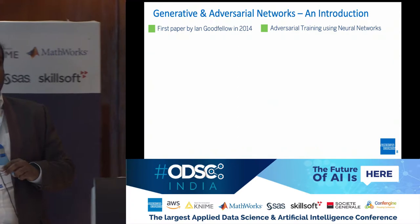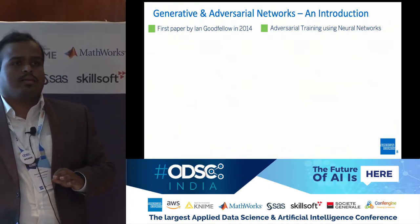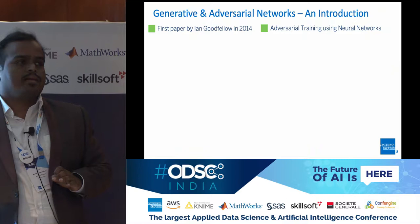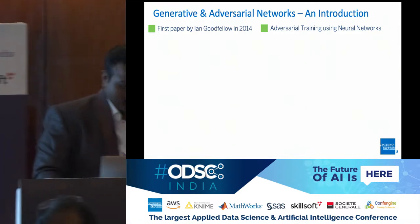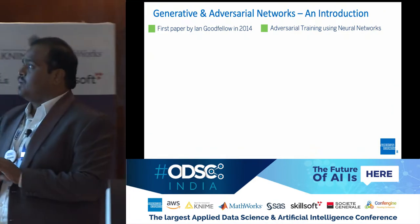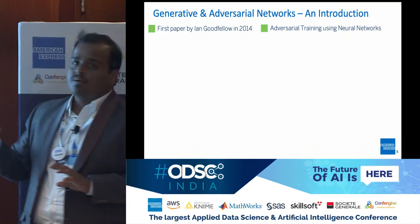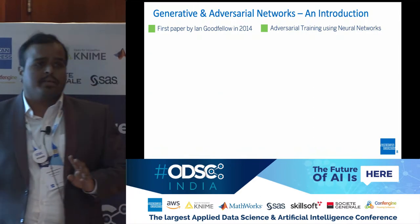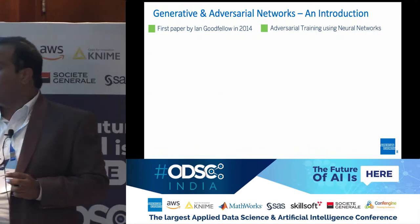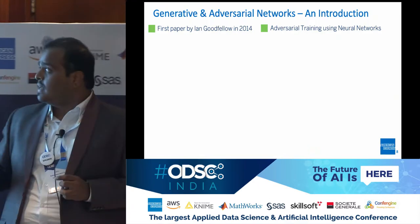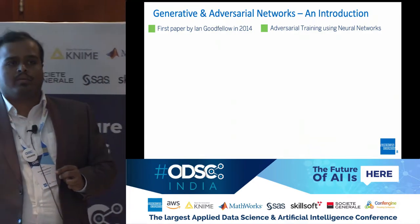A quick show of hands: how many of you have already worked to some extent with GANs? GANs were introduced in 2014 by Ian Goodfellow — it was the best paper at NIPS — and it took the world by storm as to the potential opportunities with this algorithm. The whole idea of adversarial training was born.